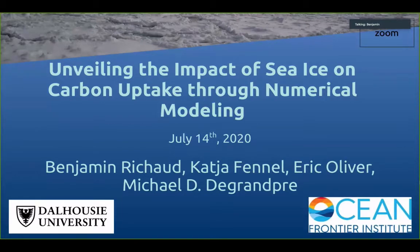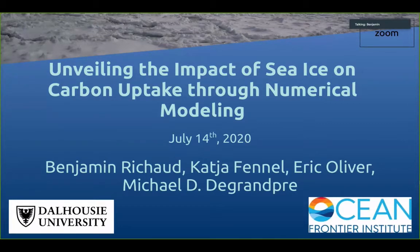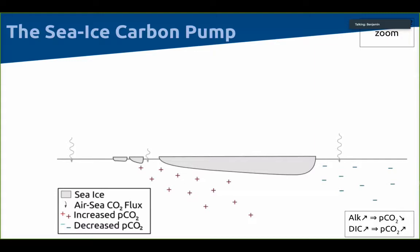The Arctic Ocean is going under drastic changes right now related to climate change. Sea ice is one of the prominent features that is changing very quickly and quite drastically. We need to better understand the impact of sea ice on the carbon cycle to better predict how carbon in the Arctic Ocean will evolve, including the pH. To do that, I'll run you through some of the processes that are impacted by sea ice.